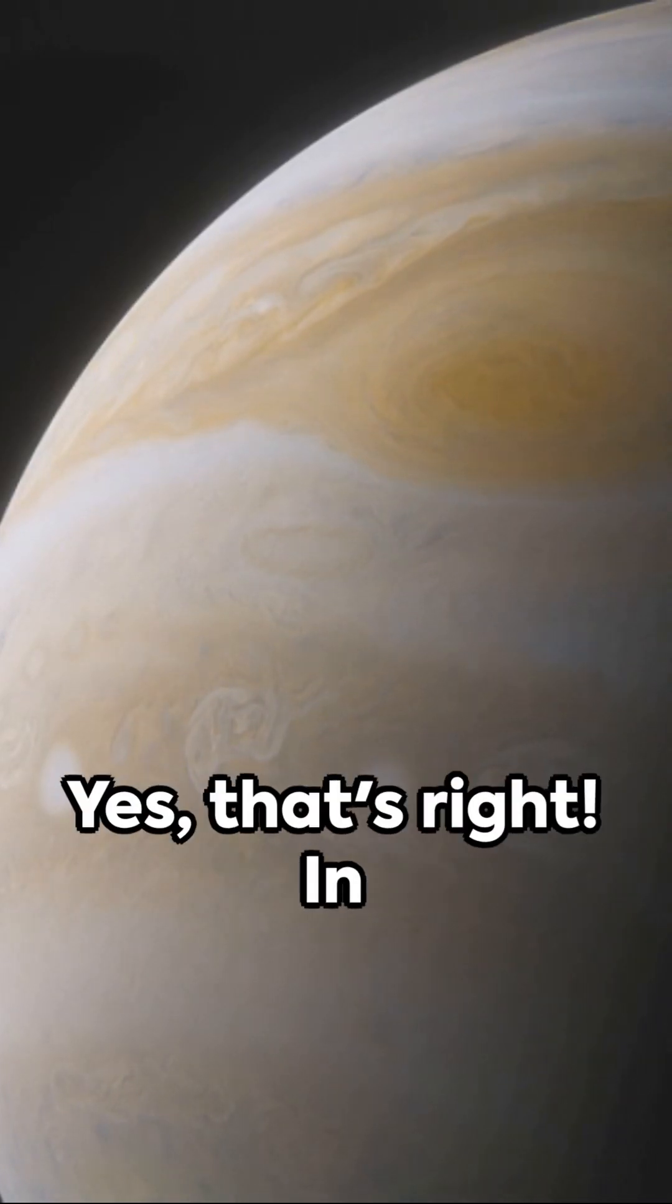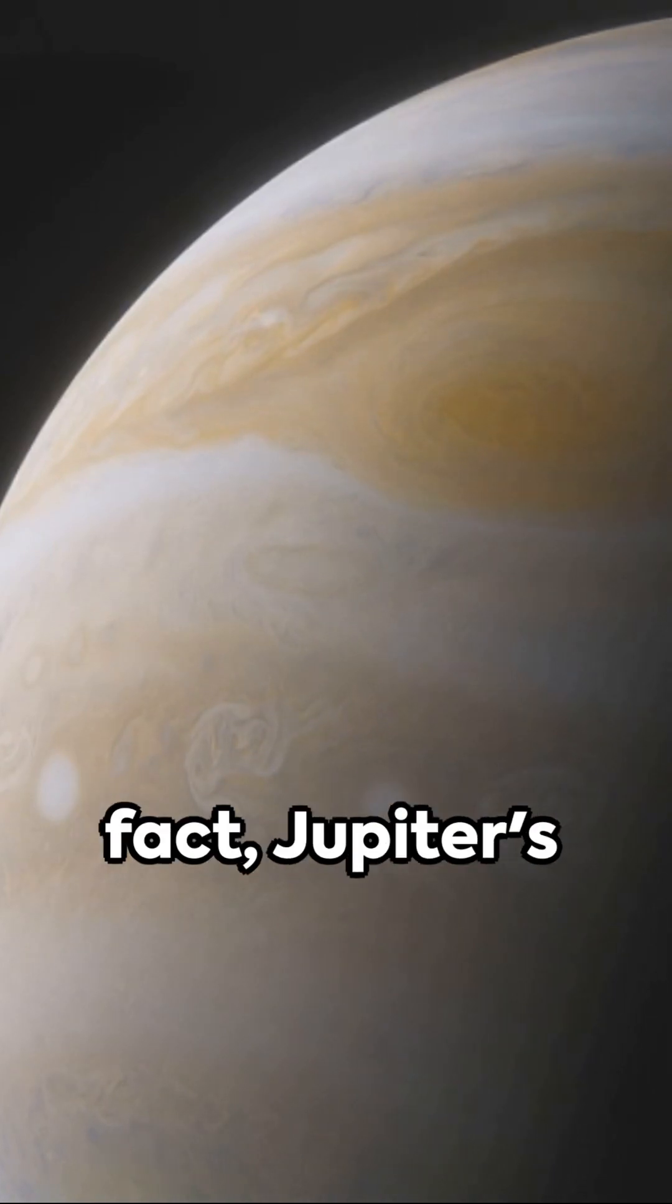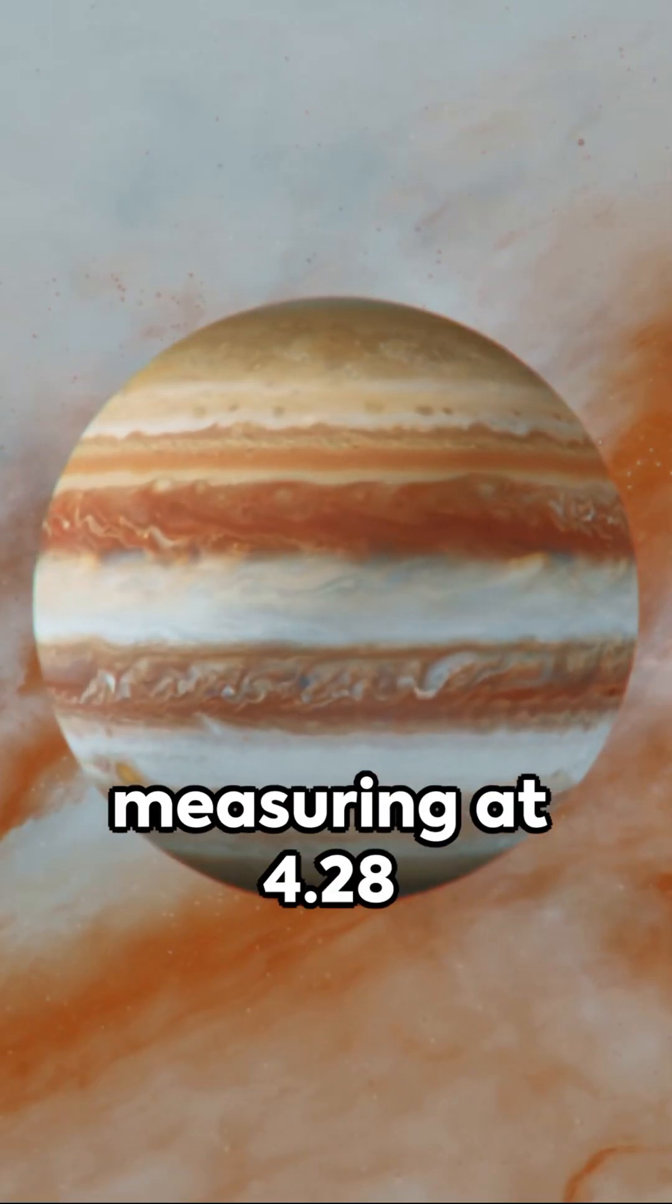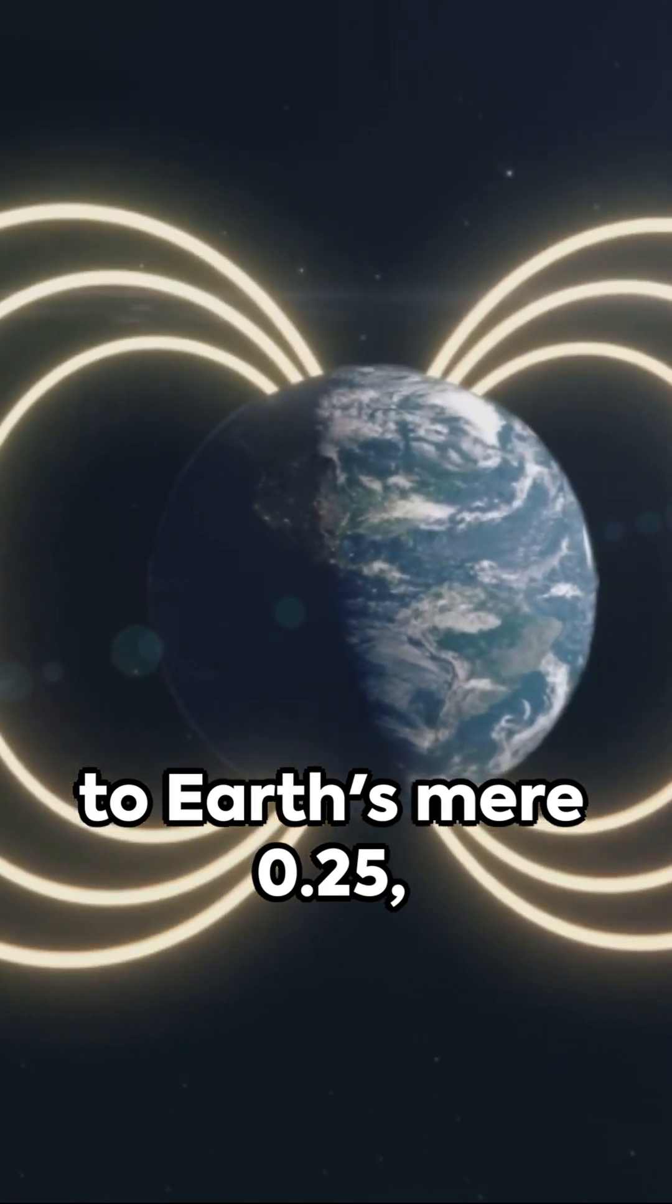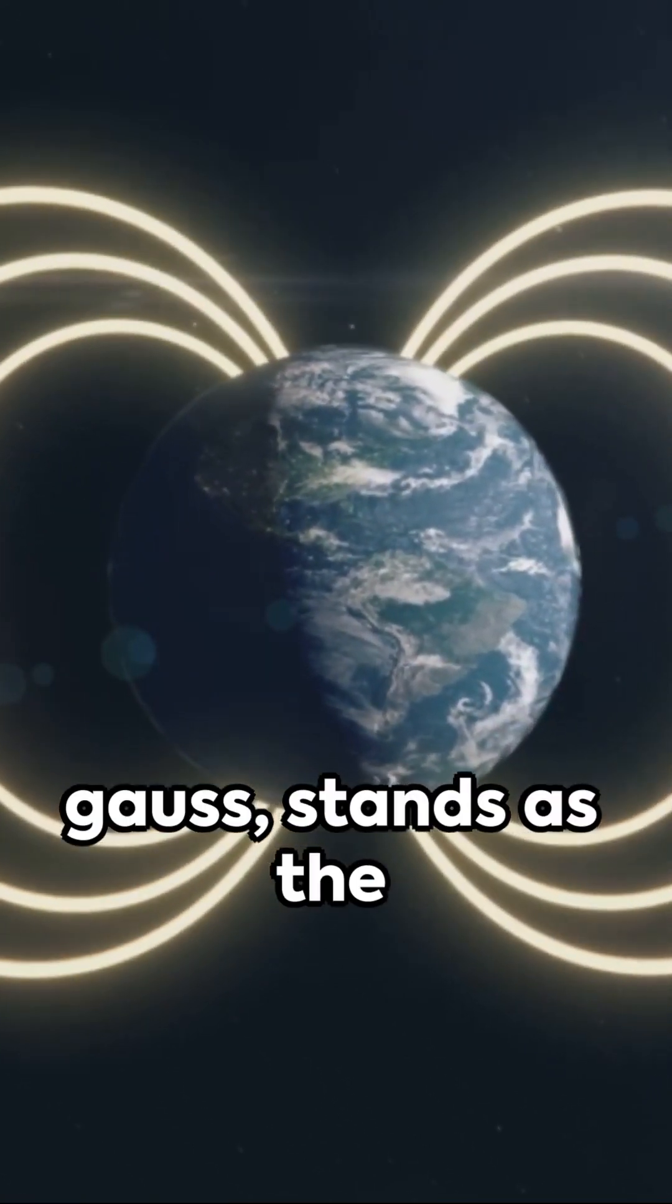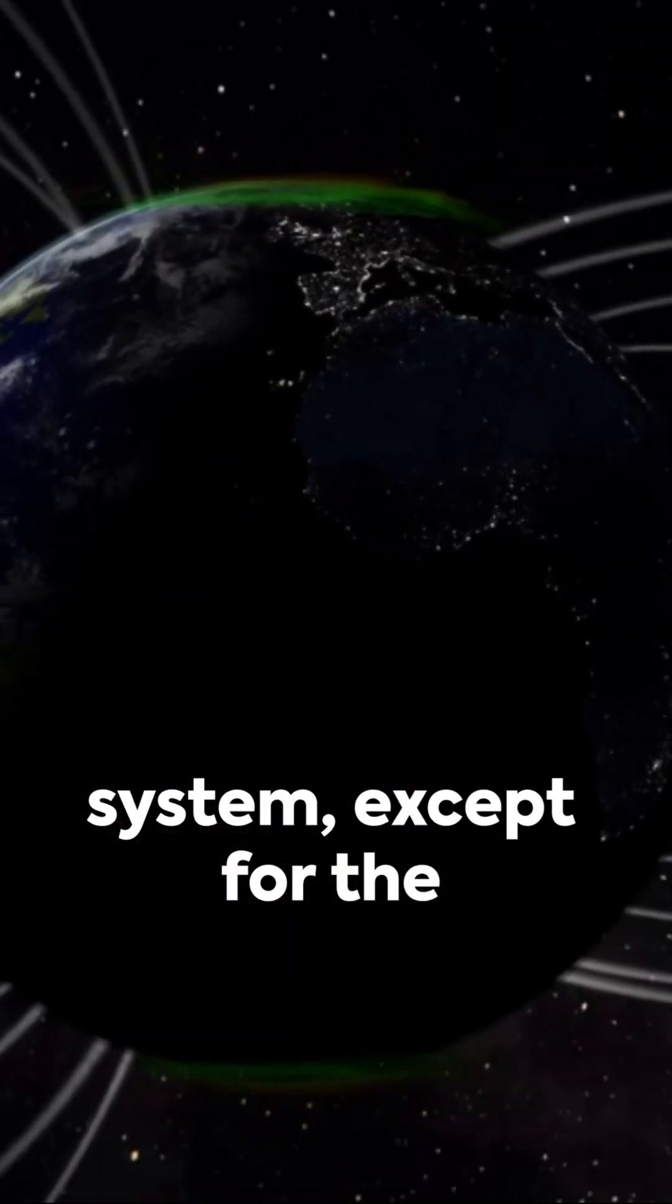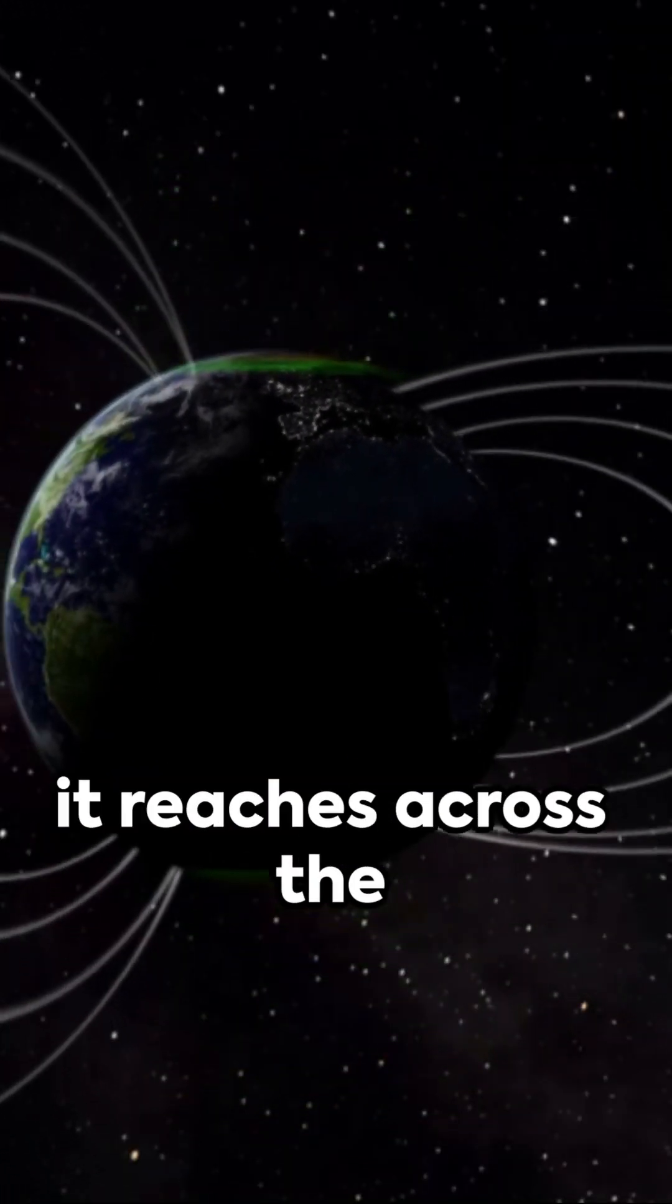Yes, that's right. In fact, Jupiter's magnetic field, measuring at 4.28 gauss compared to Earth's mere 0.25 to 0.65 gauss, stands as the strongest in the solar system except for the Sun. A force so strong it reaches across nearly 500 million miles of space to impose its presence on other celestial bodies.